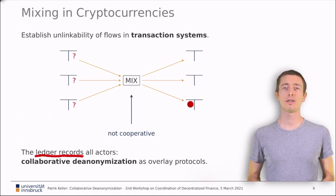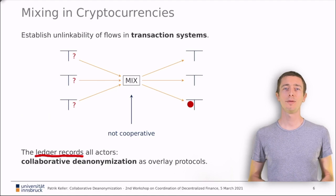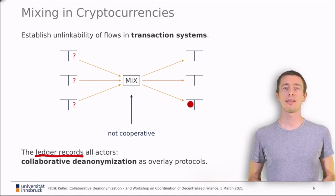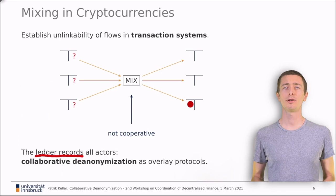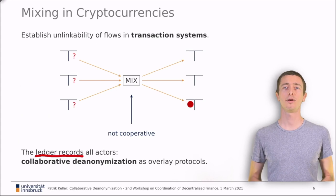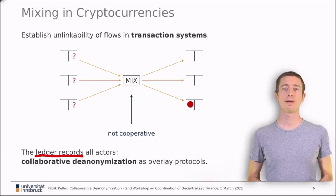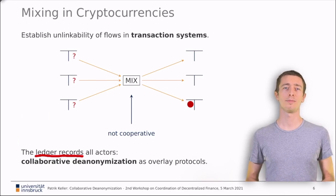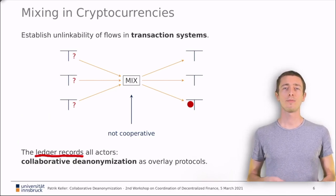Consider there was a particularly bad crime happening. Why does law enforcement not simply ask the actors to collaborate on the de-anonymization of the black sheep? We think nothing stops them. Indeed, they should ask and we think that ordinary mix participants might give up some of their own privacy to enable prosecution of bad crimes. In our short paper, we describe how this collaborative de-anonymization might work in practice. We sketch overlay protocols that enable de-anonymization in Bitcoin and Monero.